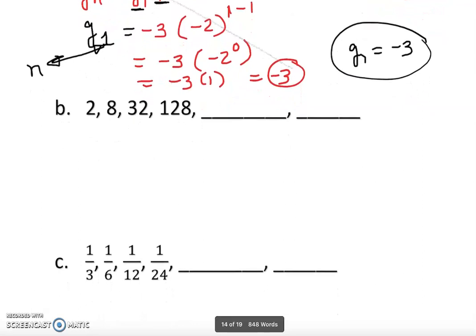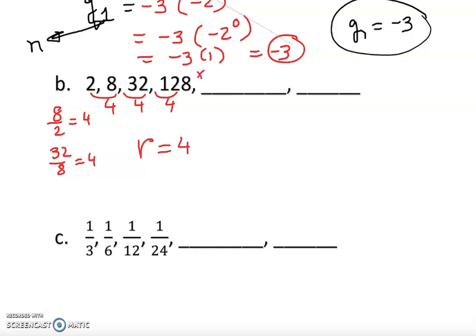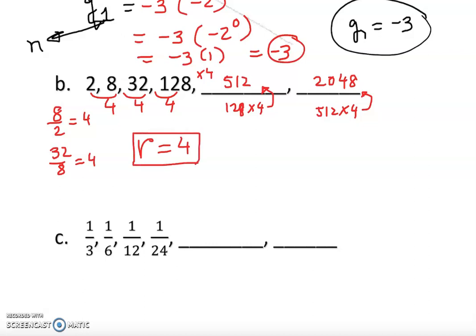Let's move to the next example. Observing the sequence: 8 divided by 2 is 4, and 32 divided by 8 is also 4 — so the ratio is equal to 4. Once you get the ratio equal to 4, you can just multiply. So 128 times 4 gives 512, and 512 times 4 gives 2048. That's how we find the missing numbers, and 4 is the common ratio.